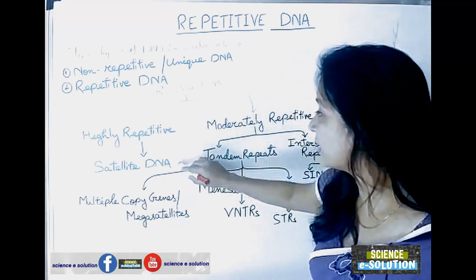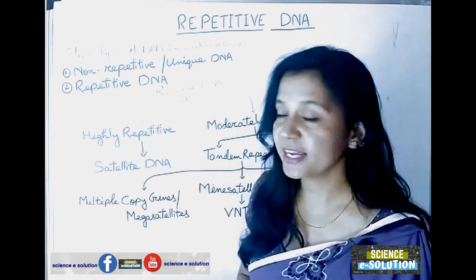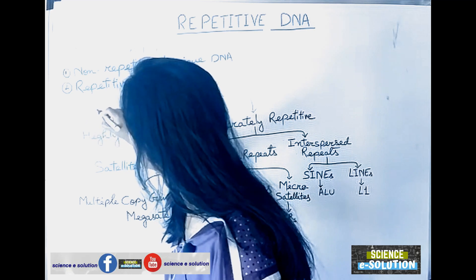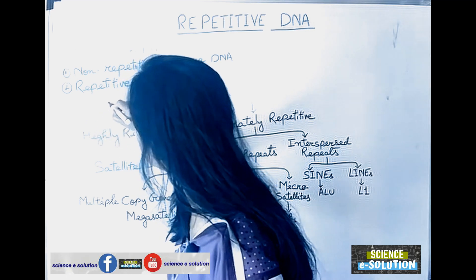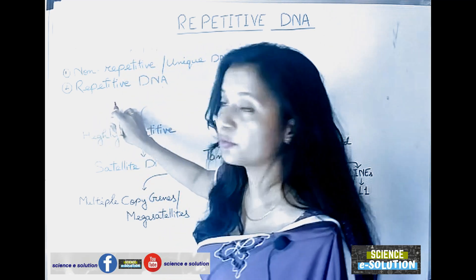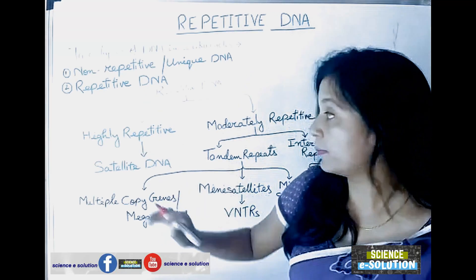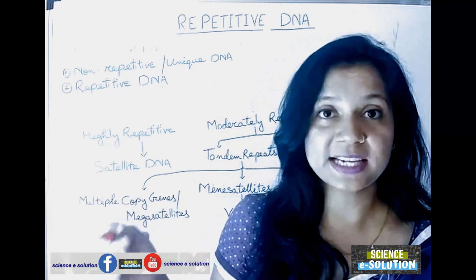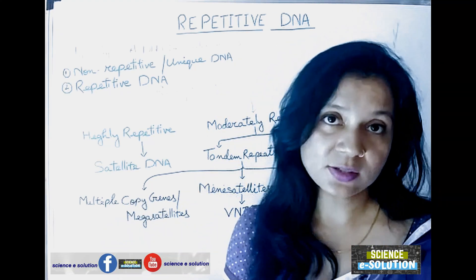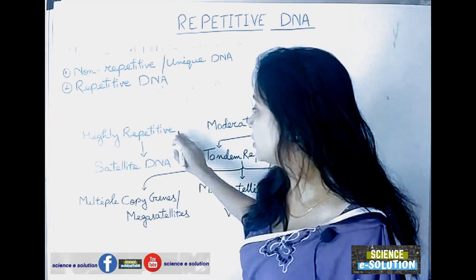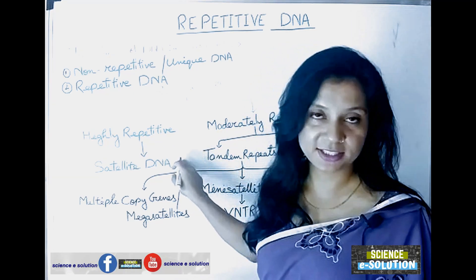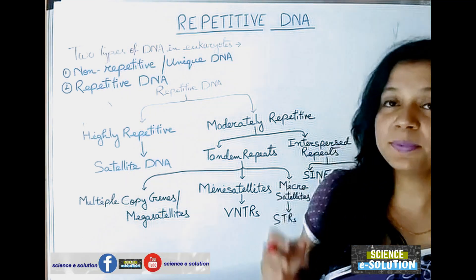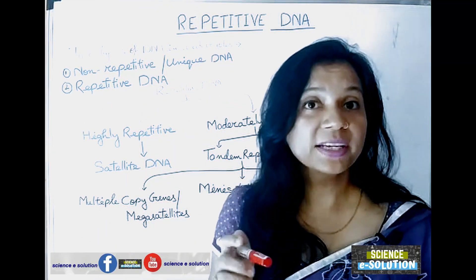Highly repetitive DNA is also known as satellite DNA. For example, the sequence A-A-G-G-C-T is a six base pair sequence, and it can be repeated one million times in our genome. That is one example of highly repetitive DNA, or satellite DNA.